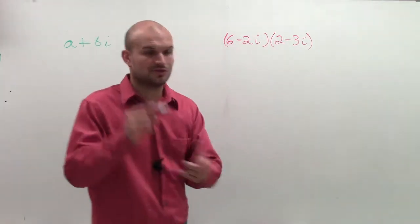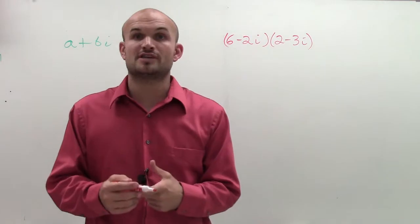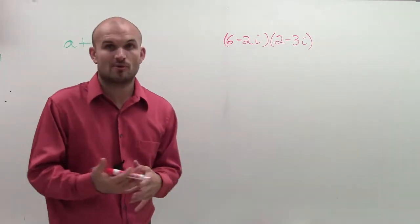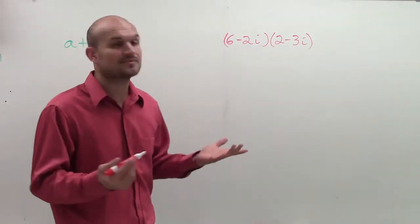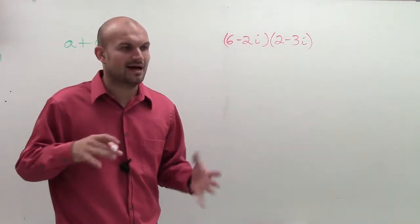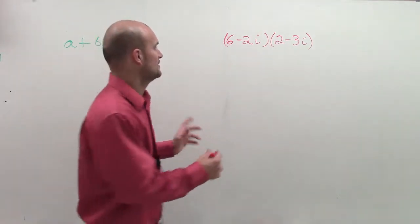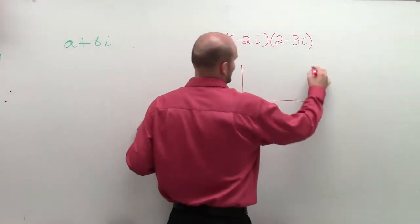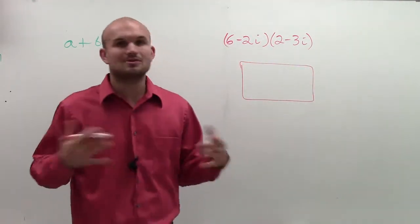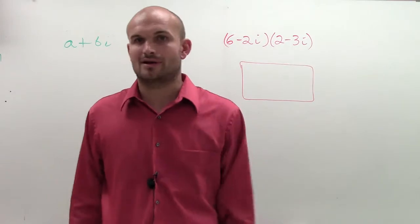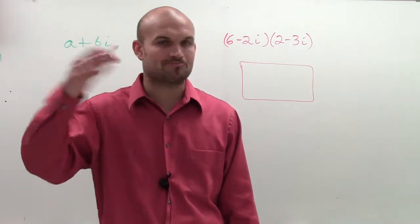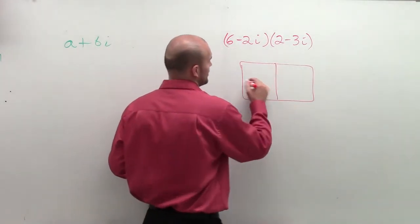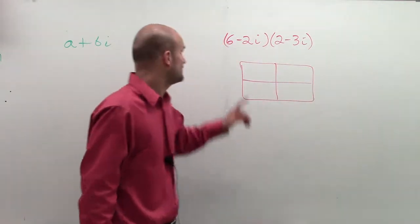You can multiply binomials using FOIL, or you can use a rectangle to help keep things organized. That's the way I'm going to do it because the rectangle helps everything stay organized. Once you get used to this, you don't need to use the rectangle at all — you can just use FOIL or do it in your head. But this really helps you organize the information.